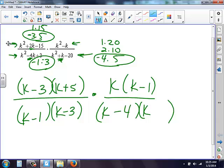Now that I've simplified, I can start crossing stuff off. Anything on the top that matches the bottom, we can cross off. k plus 5, k plus 5. k minus 3, k minus 3. k minus 1, k minus 1.